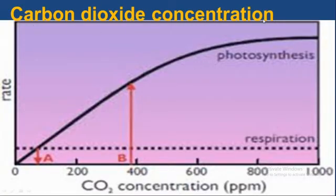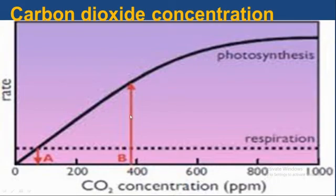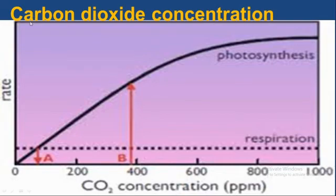The next factor is carbon dioxide concentration. During the light-independent stage, ribulose bi-phosphate combines with carbon dioxide and forms glycerate phosphate. If there is a lower concentration of carbon dioxide, there is less production of GP, meaning ribulose bi-phosphate cannot fix the required amount of carbon dioxide to form glycerate phosphate. This affects the light-independent stage of photosynthesis.